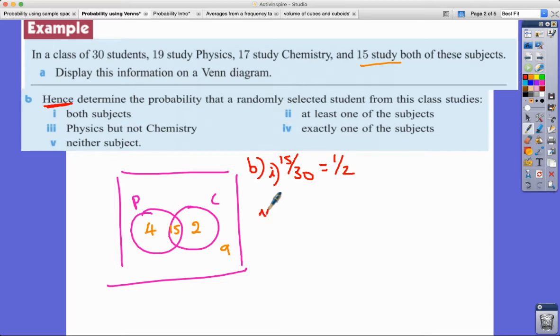Number two: at least one of the subjects. At least one means at the very least one so you could do one or two subjects, so it's everything within the union of the physics and chemistry bubbles. So that would be 21 over 30. Can we simplify that? Yes I can, they're both multiples of seven so three tenths.